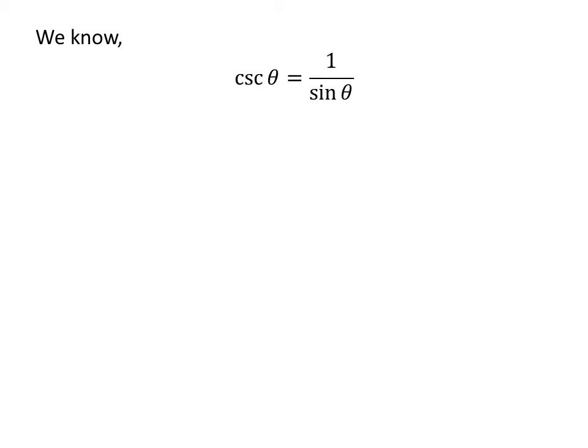We know cosec θ equals 1 over sin θ. So applying this trigonometry identity gives us cosec(π/2 - x) equals 1 over sin(π/2 - x).